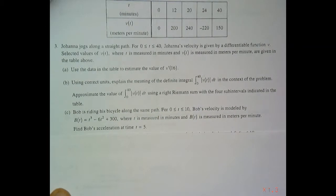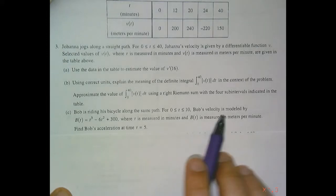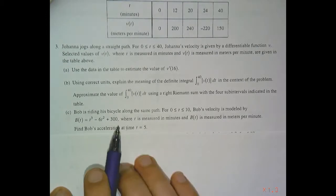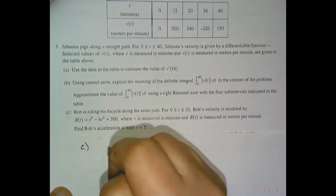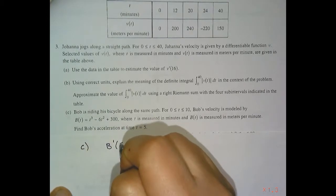Bob is riding his bicycle along the same path from 0 to 10. Bob's velocity is modeled by B of T, where T is measured in minutes. Find Bob's acceleration. So part C, they want us to find B prime of 5.